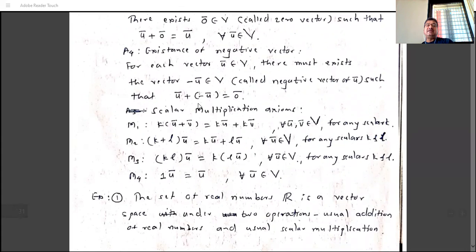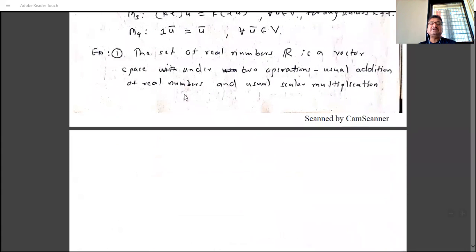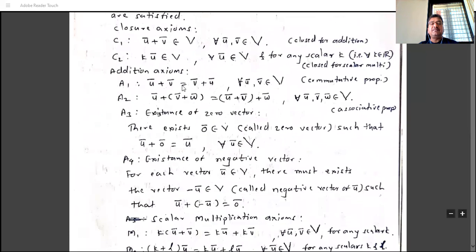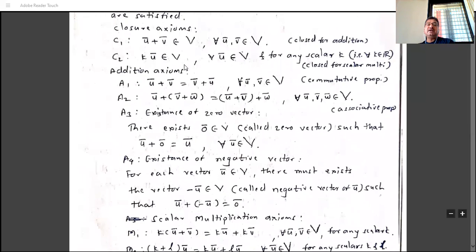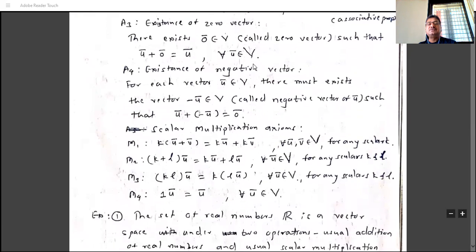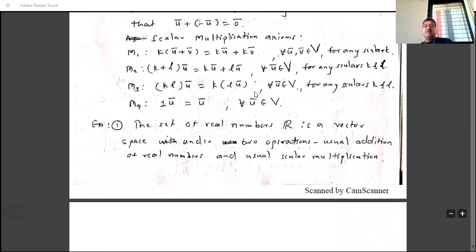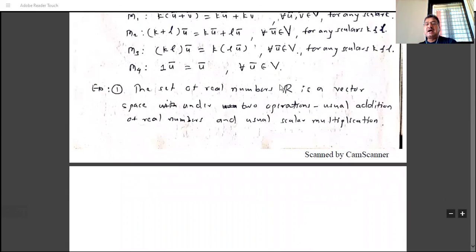The set of natural numbers is not a vector space, and the set of integers is also not a vector space. C2 fails for the set of integers as well: taking k = 1/2 and Ū = 3, we get (1/2)(3) = 3/2, which is not an integer. Therefore both the set of natural numbers and the set of integers are not vector spaces.